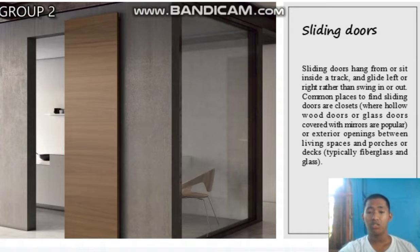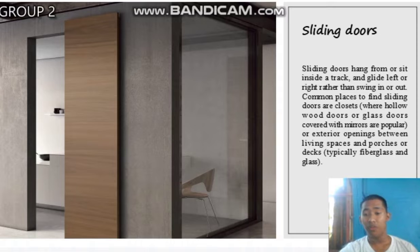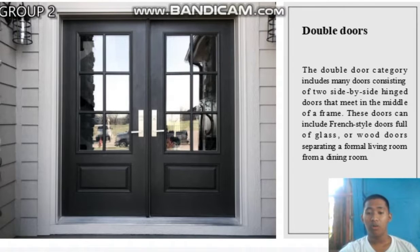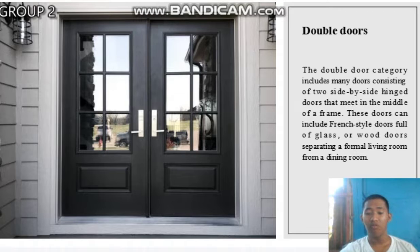Next are sliding doors. Sliding doors hang from or sit inside a track and glide left or right rather than swing in or out. Common places to find sliding doors are closets — where hollow wood or mirrored glass doors are popular — or exterior openings between living spaces and porches or decks, typically made of fiberglass and glass. Next is the double door. The double door category includes doors consisting of two side-by-side hinged doors that meet in the middle of a frame. These can include French-style doors full of glass, or wood doors separating a formal living room from a dining room.